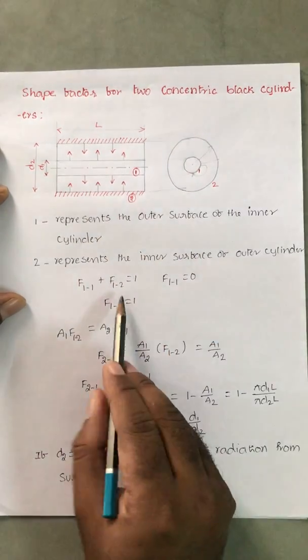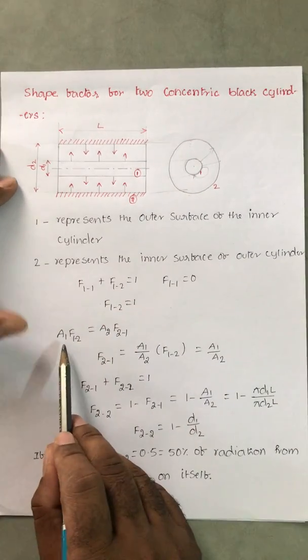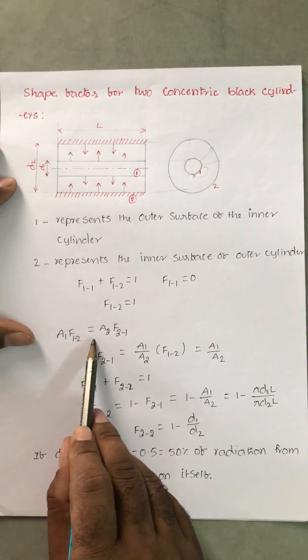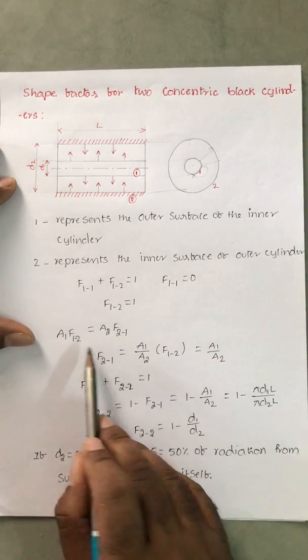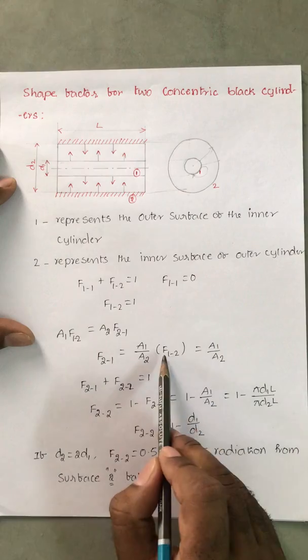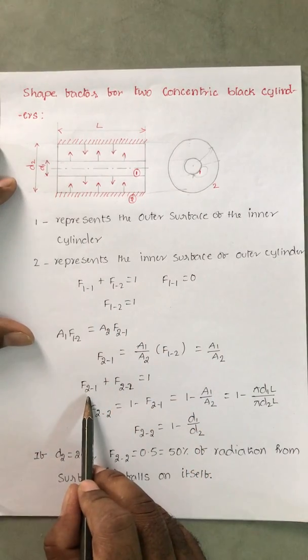That's why, if F₁₁ is 0, then F₁₂ becomes 1. Apply reciprocity rule: A₁F₁₂ equal to A₂F₂₁. So F₂₁ equal to A₁ by A₂ times F₁₂. F₁₂ is 1, so A₁ by A₂.